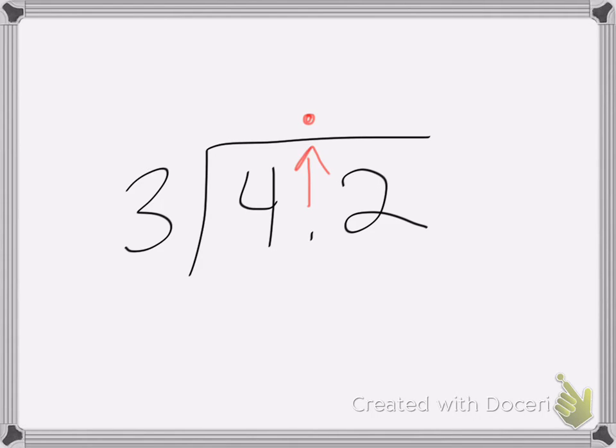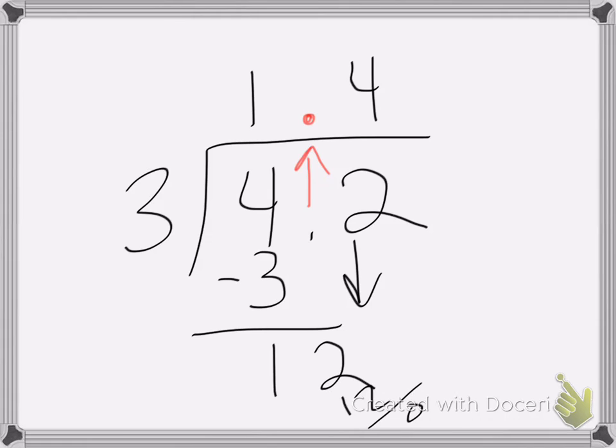So now I can divide and ignore the decimal place because I've already got it where I need it. 3 goes into 4 one time, that's 3. 4 minus 3 is 1, bring down my 2. 3 goes into 12 four times, that's 12, and it zeroes out.